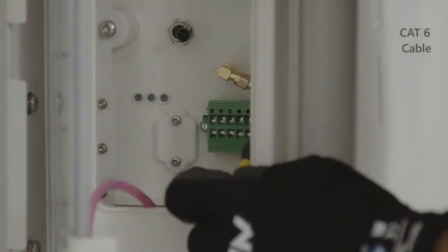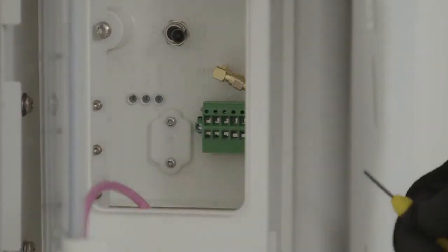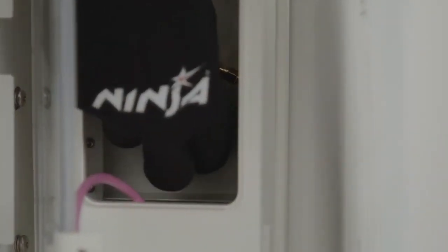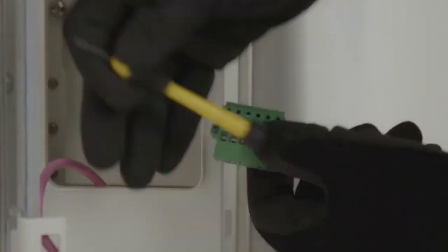For this process, firstly you need to undo the terminal block and remove it, and then simply wire in the ground and the two A and B terminals as shown here.